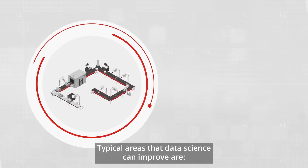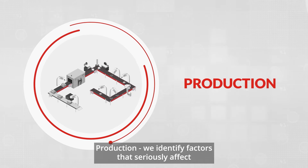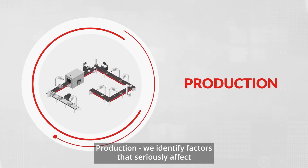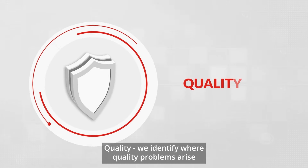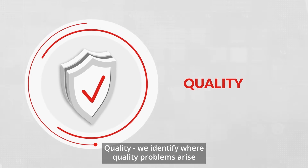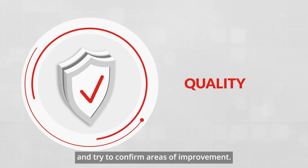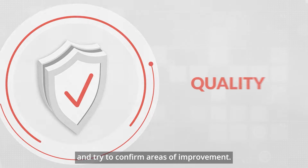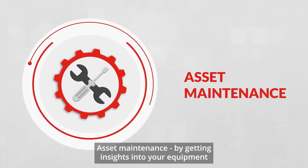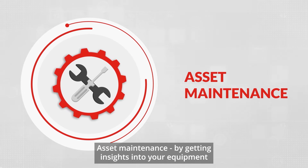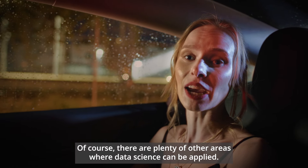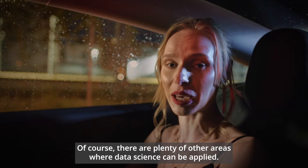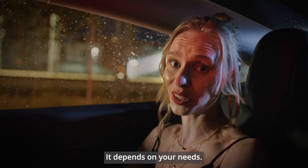Typical areas that data science can improve are production — we identify factors that seriously affect your production speed or volume. Quality — we identify where quality problems arise and try to confirm areas of improvement. Asset maintenance — by getting insights into your equipment, we can identify issues more quickly and avoid unplanned downtime. Of course, there are plenty of other areas where data science can be applied. It depends on your needs.